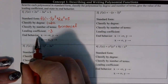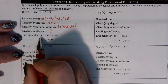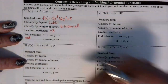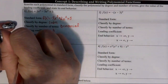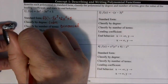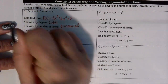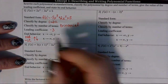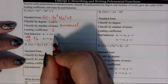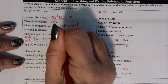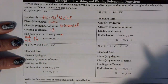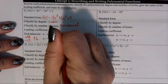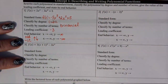For the end behavior, we use the leading coefficient test. Our degree is odd and we have a negative leading coefficient, so we know that this graph is going to start up on the left and end down on the right. As x approaches negative infinity, y is approaching positive infinity, and as x approaches positive infinity, y is headed down to negative infinity.